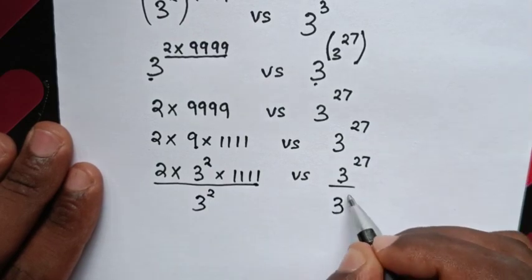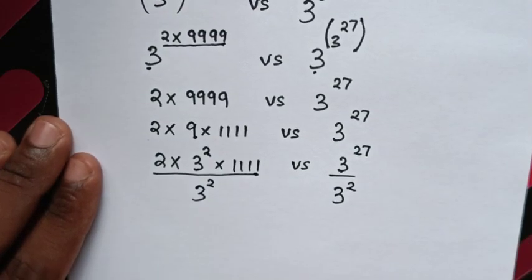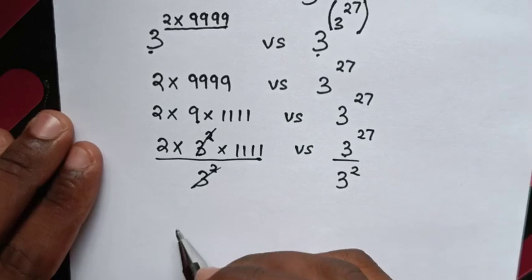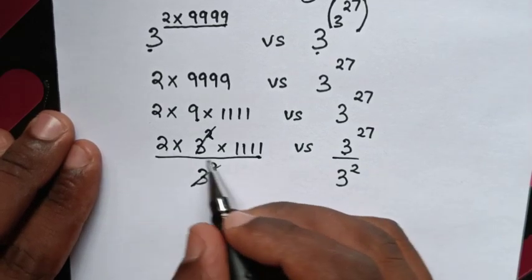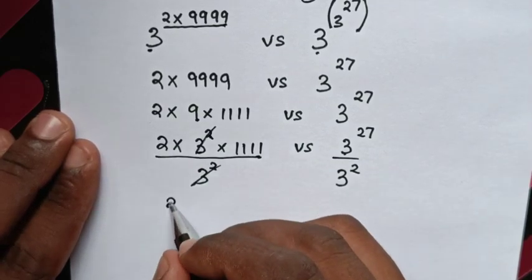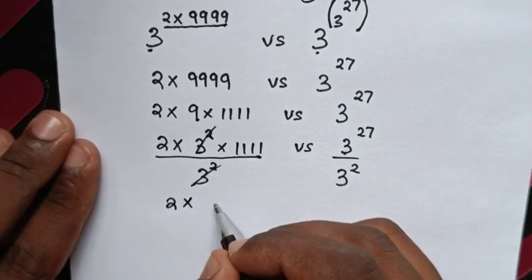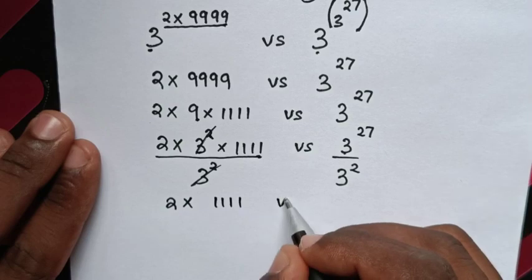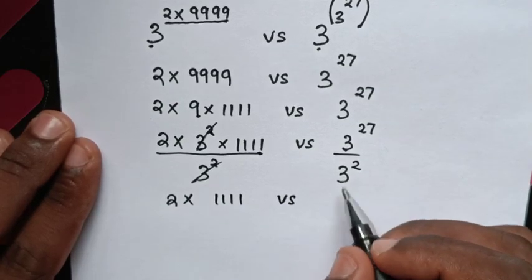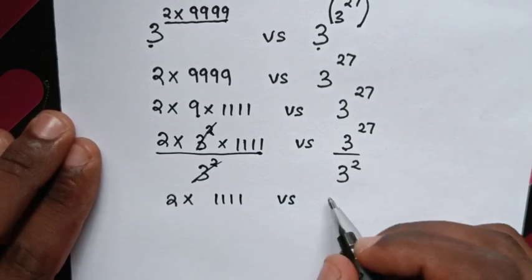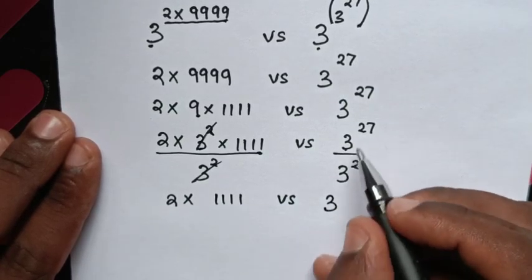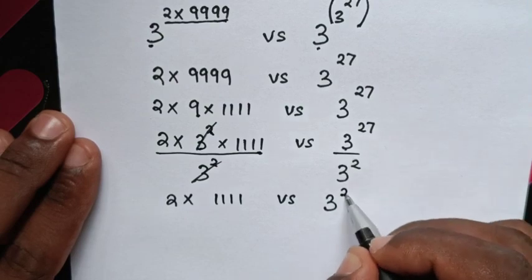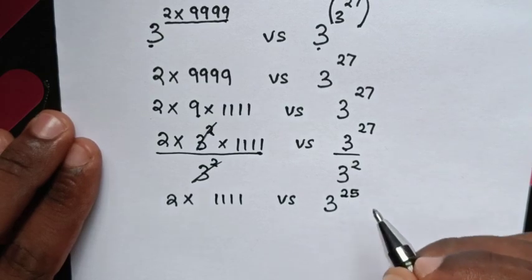We divide by 3 squared on both sides, so the 3 squared terms cancel. That leaves us comparing 2×1111 on the left with 3^(27−2) = 3^25 on the right.